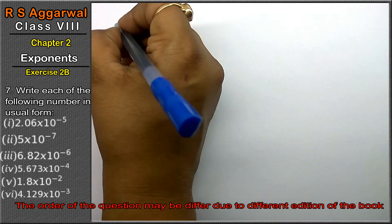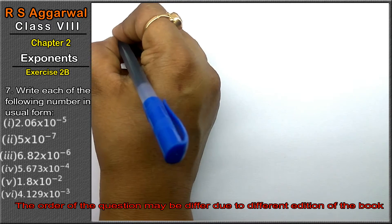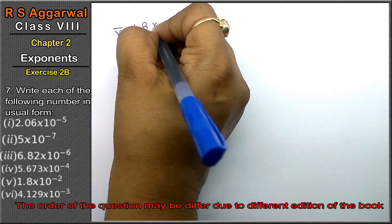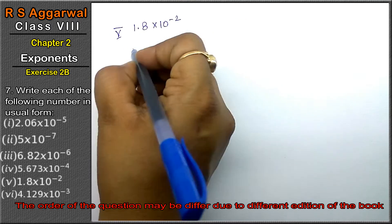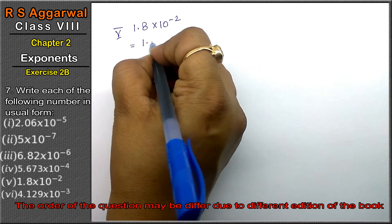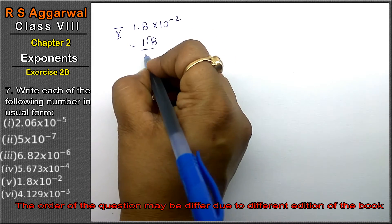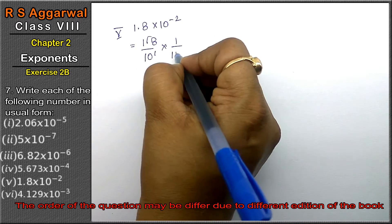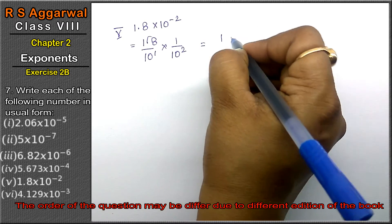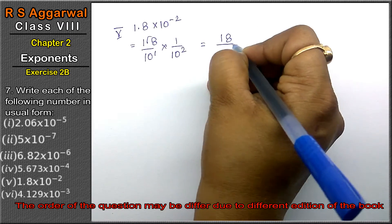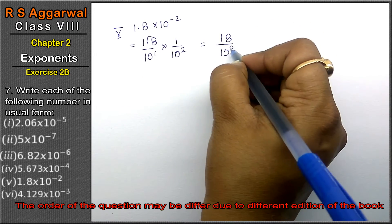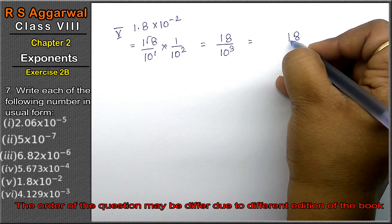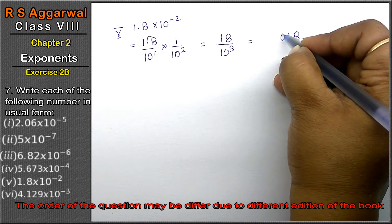Let's do the fifth part: 1.8 × 10⁻². We can write this as 18 × 10⁻¹ × 10⁻², making it 18 × 10⁻³. After 3 digits we place the point — giving us 0.018. That is the answer.